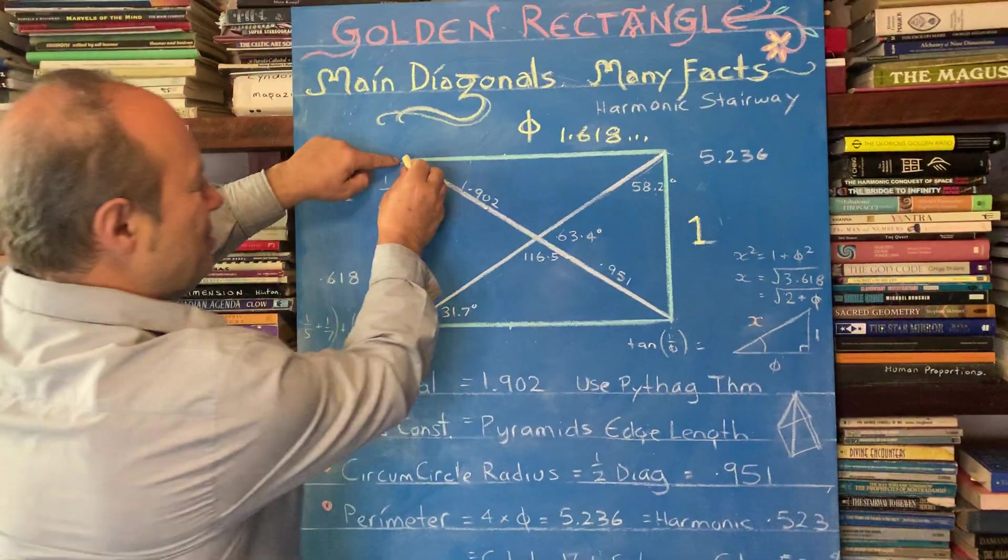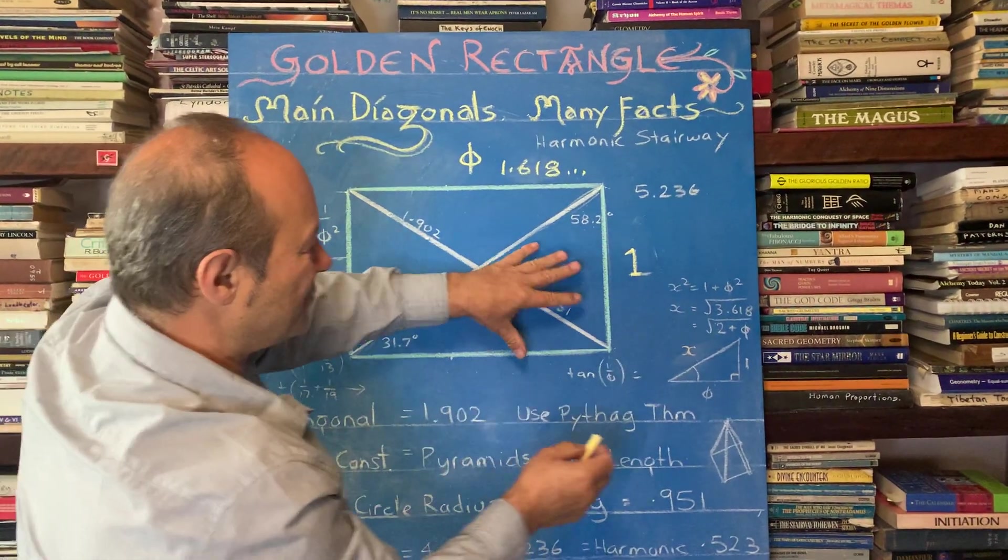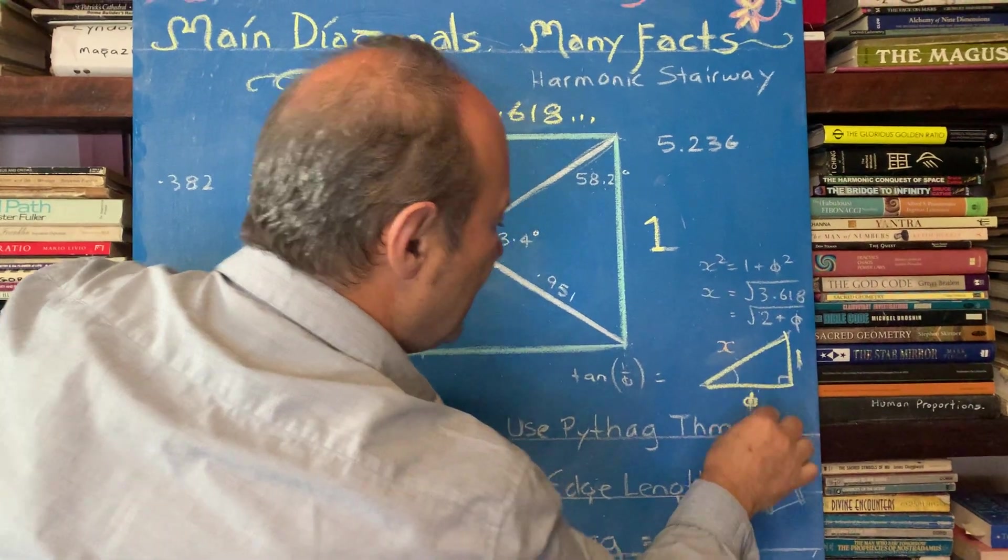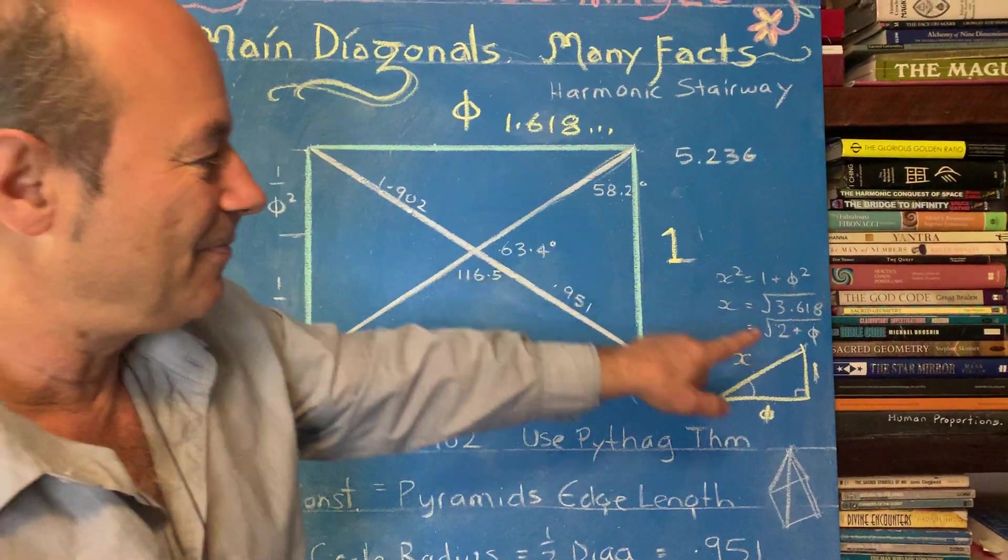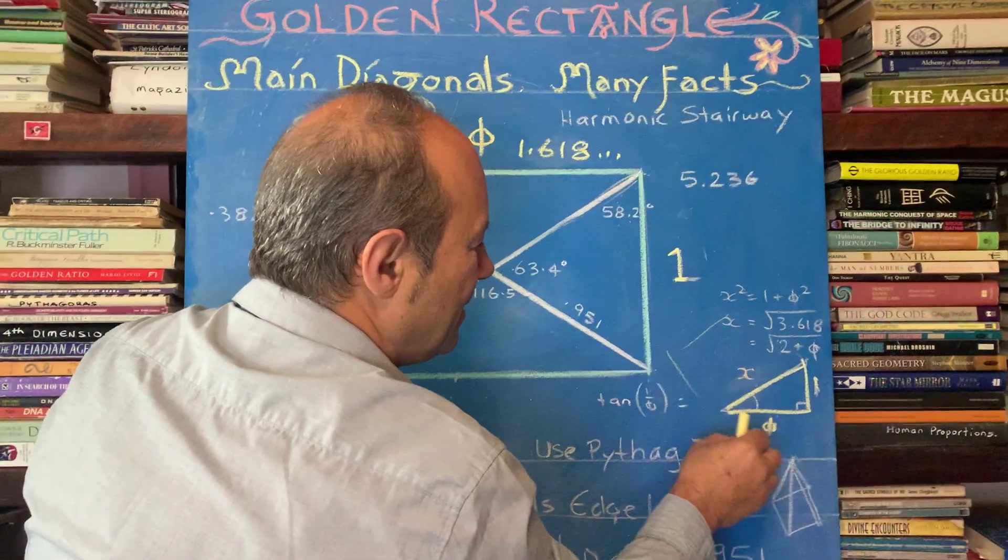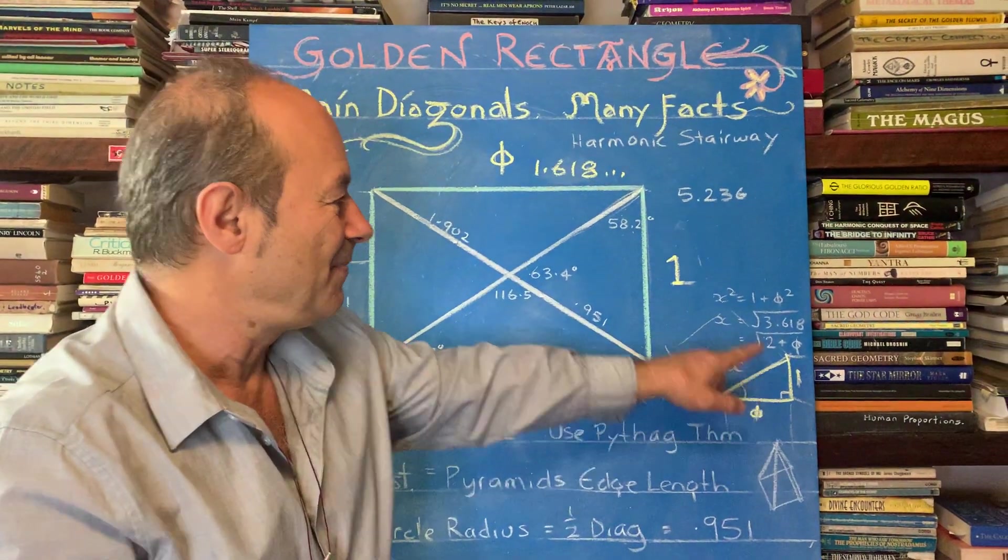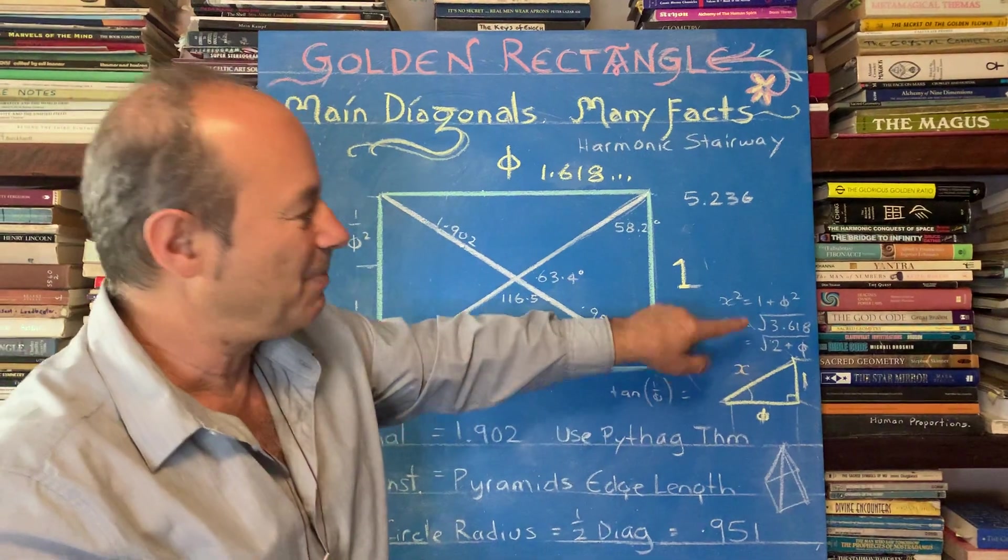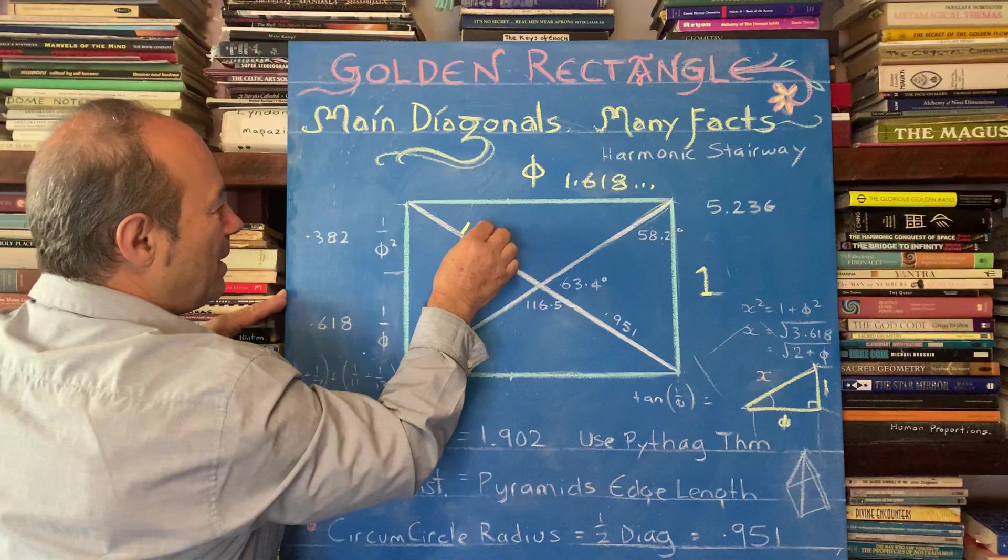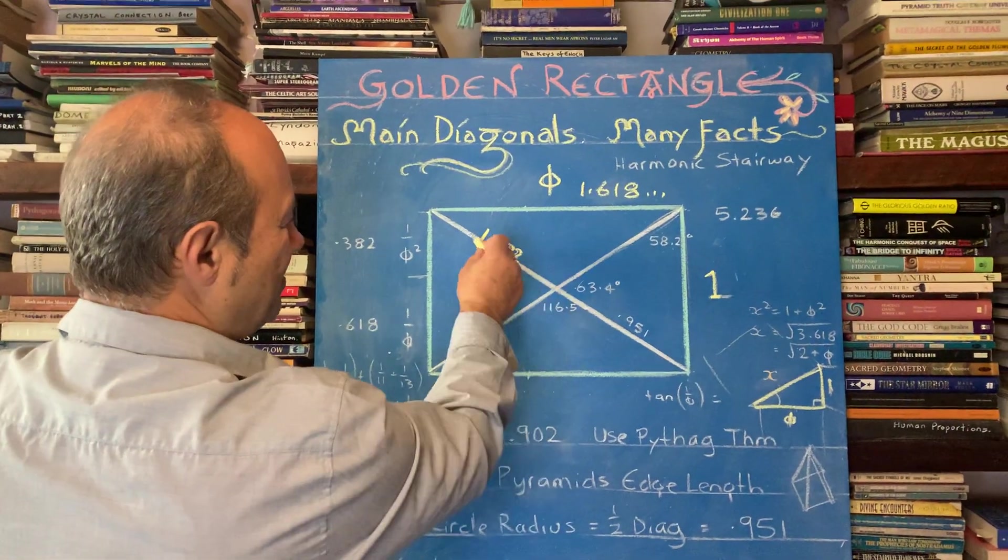So the first thing is we want to measure that diagonal here. So what I need to do is I've drawn a triangle here and you call it one over phi. So by knowing Pythagoras's theorem, one squared plus phi squared equals x squared. That's looking at the square. That's adding up all the squares around this only because it's a 90 degree triangle. When you finish Pythagoras's theorem, you get x equals 1.9. So 1.902 happens to be the diagonal using Pythagoras's theorem.